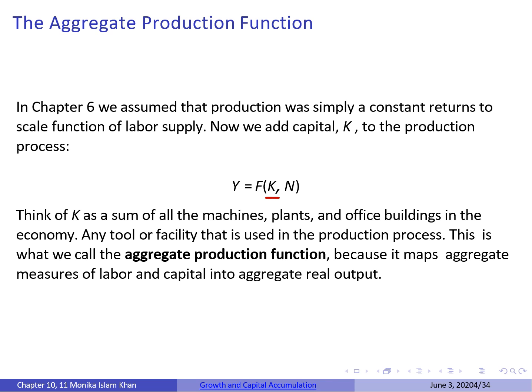This K includes all physical capital used in production — think of K as the sum of all machines, equipment, plants, and office buildings in the economy. Any tool or facility used in the production process is included in K, physical capital. This is called the aggregate production function because it maps aggregate measures of labour and capital into aggregate real output.